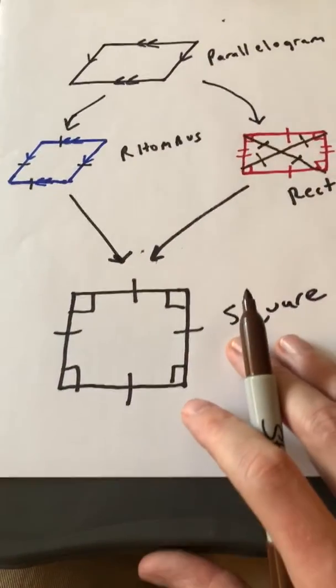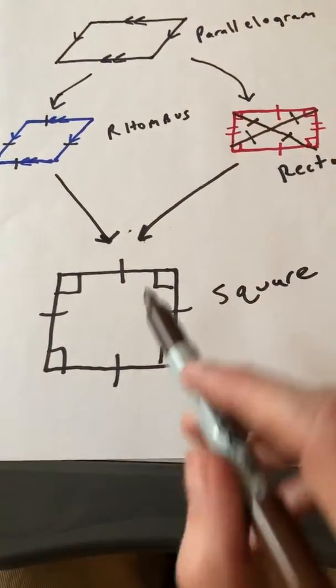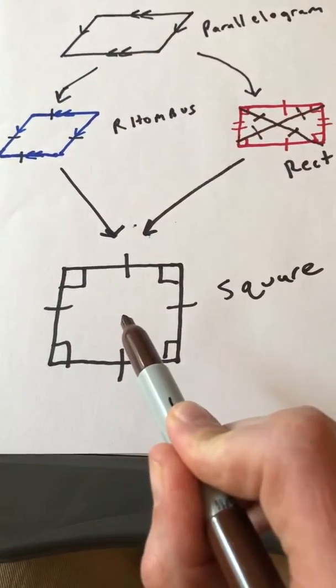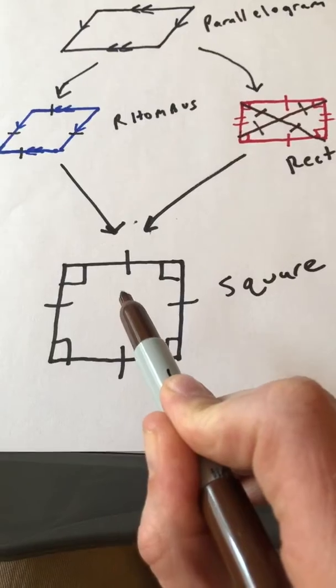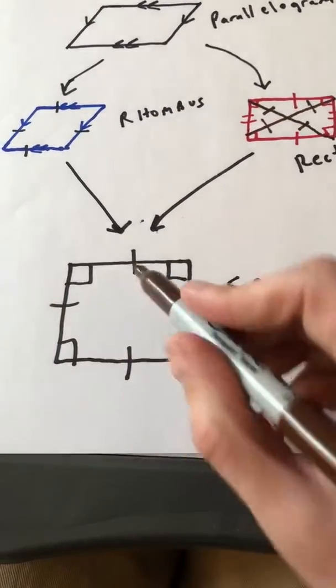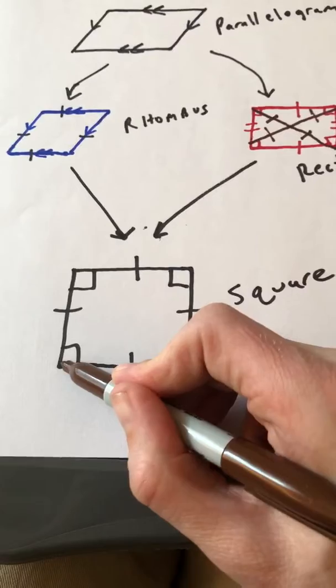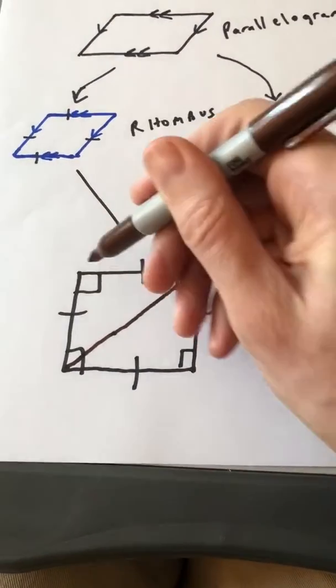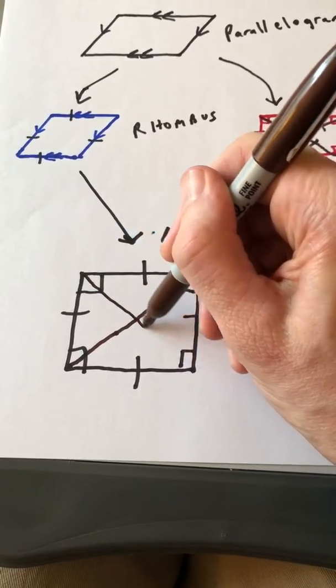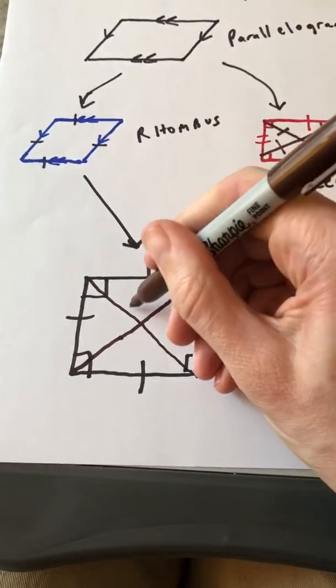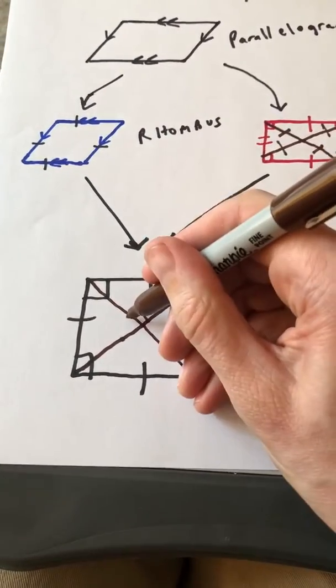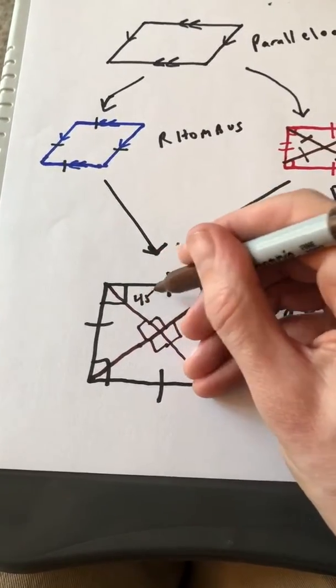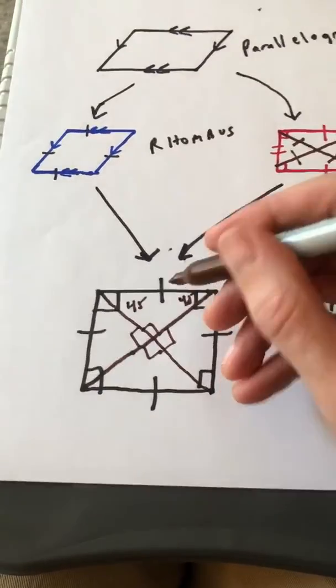And there is a type of parallelogram that's both a rhombus and a rectangle. And that is the square. The square has four 90 degree angles and four congruent sides. And the interesting property of the square is that the diagonals of a square actually split the square up into four 90 degree triangles. And not only are they 90 degrees, but they're actually all 45, 45, 90.